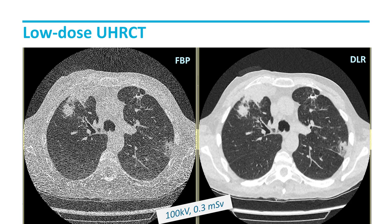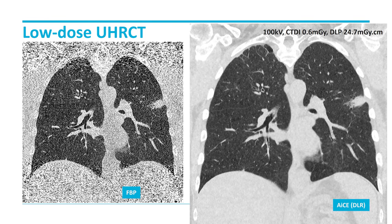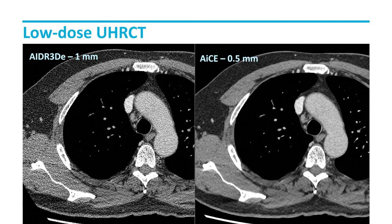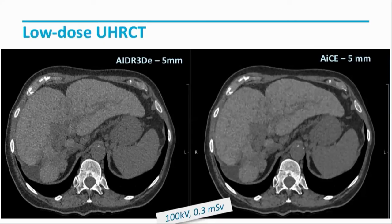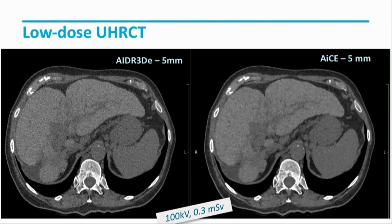Compared to filter back projection, the image quality is excellent even for extremely low doses like 0.3 millisievert, with a CTDI of 0.6 millisievert. You see also that in the mediastinum, where noise on low-dose scans is high, we can reduce it to normal levels. And even in the abdomen, where noise becomes really prohibitive, we can bring it back to very good image quality at very low dose.